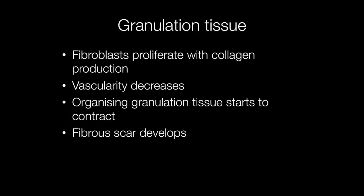As the granulation tissue matures, the fibroblasts proliferate with collagen production, vascularity will gradually decrease, and the organising granulation tissue starts to contract. This will result in the area of tissue damage shrinking.